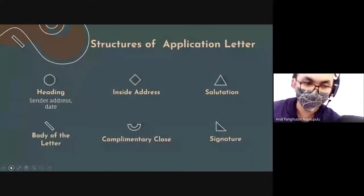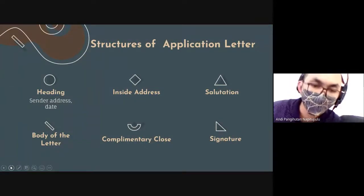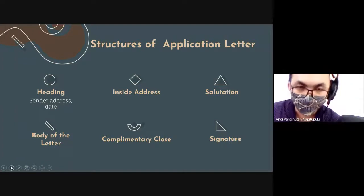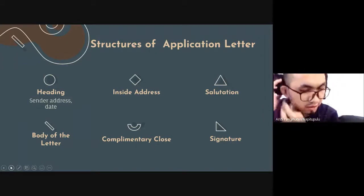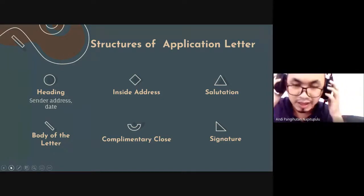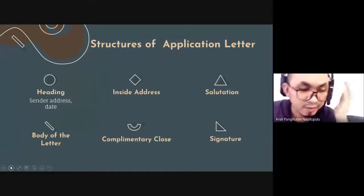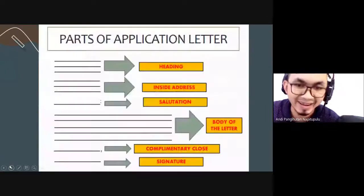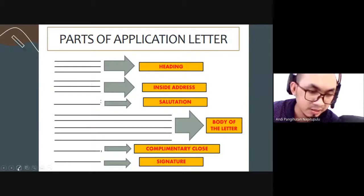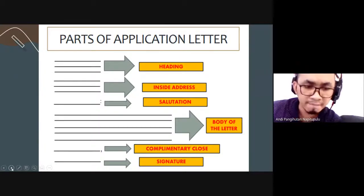Now let's look at the structure of an application letter. When writing one, you need to know about the heading — which includes the sender's address and date — inside address, salutation, body, complementary close, and signature. We will discuss each part one by one. This is the form showing how to write your application letter, from heading to signature.